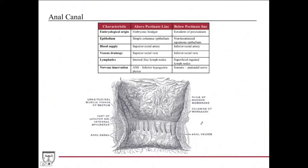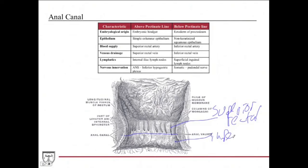For blood supply: above the pectinate line is the superior rectal artery, and below the pectinate line is the inferior rectal artery. The same applies to venous drainage — above is the superior rectal vein, below is the inferior rectal vein. The arteries and veins share the same names.